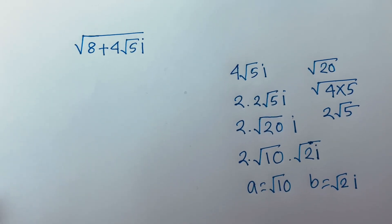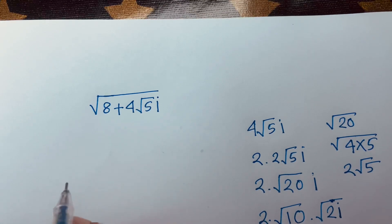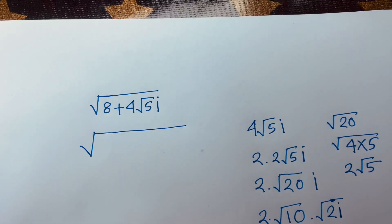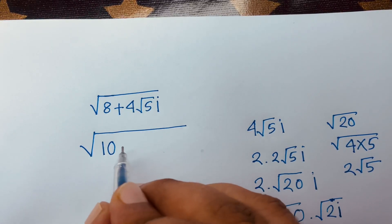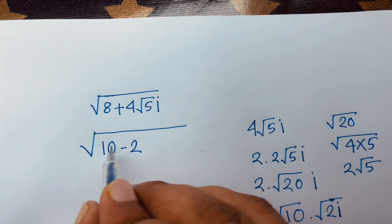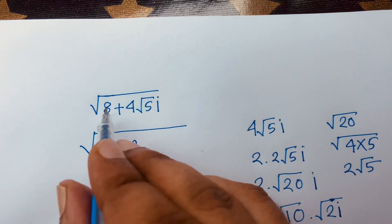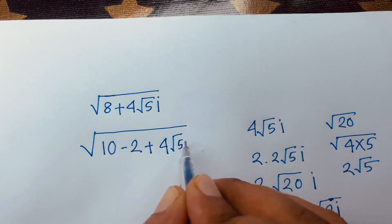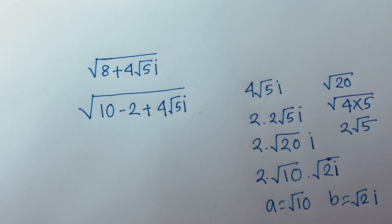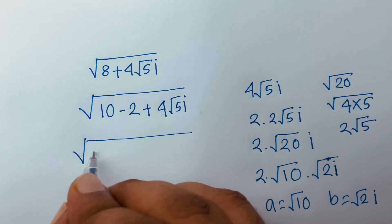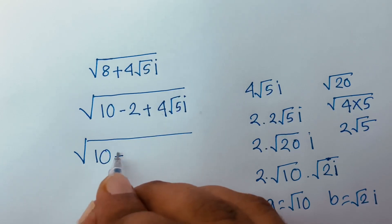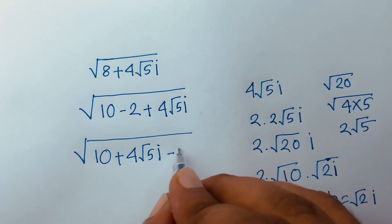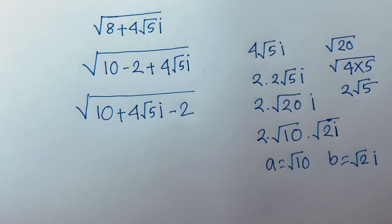Now for the real part: √8 corresponds to 10 minus 2, which equals 8. So 8 + 4√5·i checks out. I can see this equals (√10 + √2·i) minus 2.